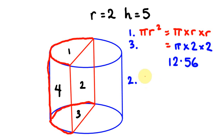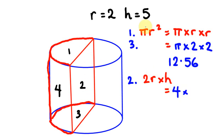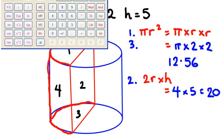The area of part 2 equals the diameter (2r) times the height. So that's 2 times 2, which is 4, times the height of 5 — giving us 20 units squared. I'll write 20 and hit memory plus. So far with parts 1, 3, and 2 added together we should have 32.56.